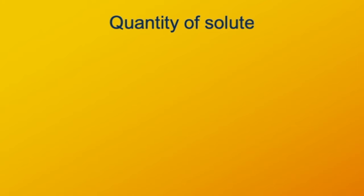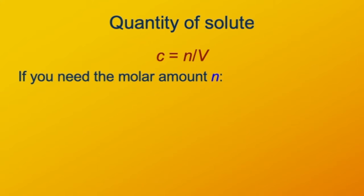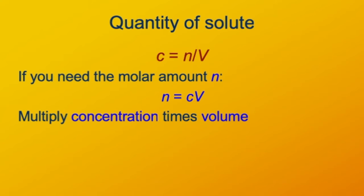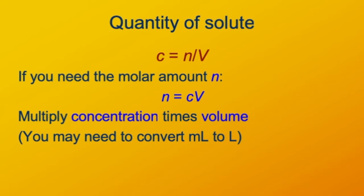What if we want to know the number of moles or the mass of a solute in a solution? Starting with our basic formula — concentration equals number of moles divided by volume — we solve for N: N equals C times V, concentration times volume. When you do this, your volume will often be in milliliters, but you'll want it in liters because concentration is in moles per liter. So you'll likely need a milliliters-to-liters conversion.